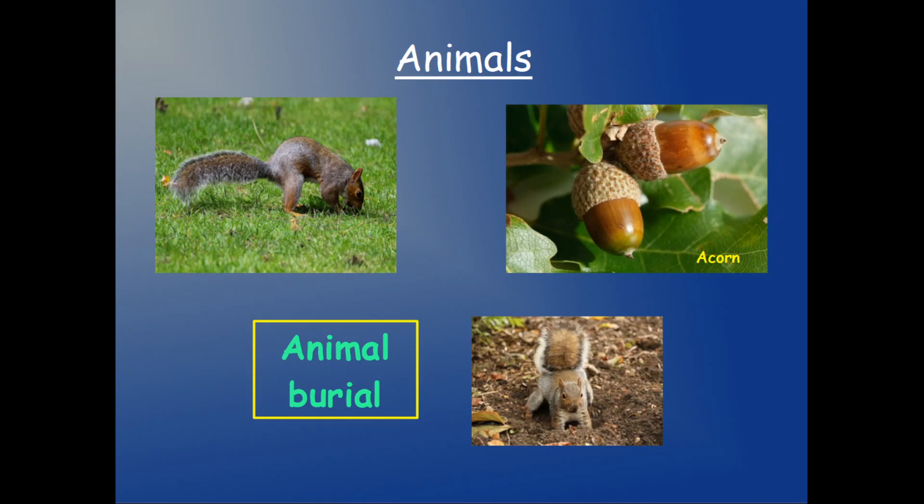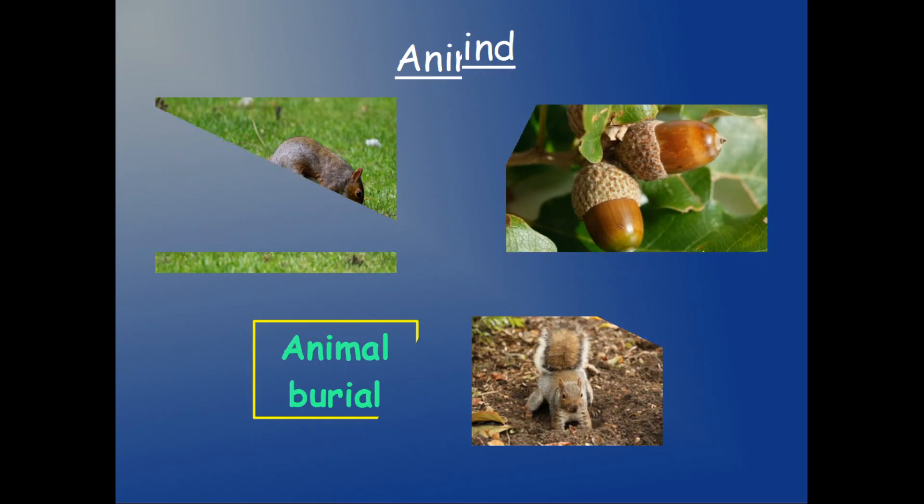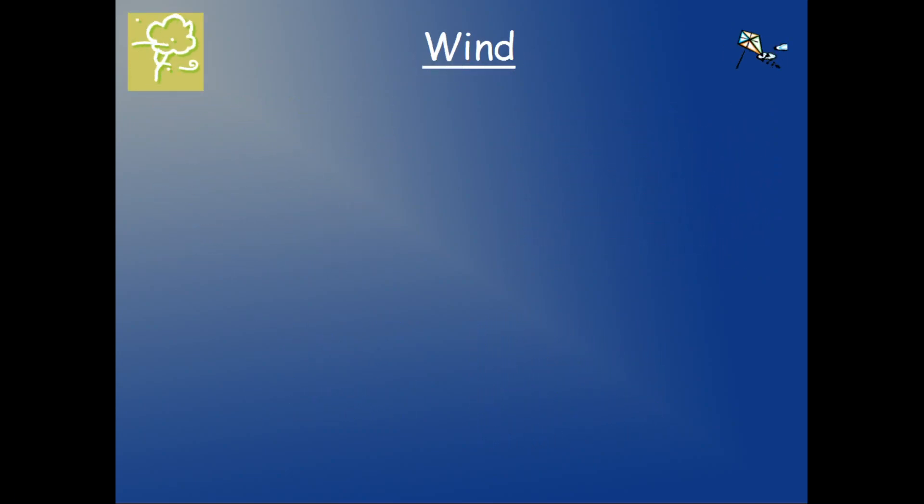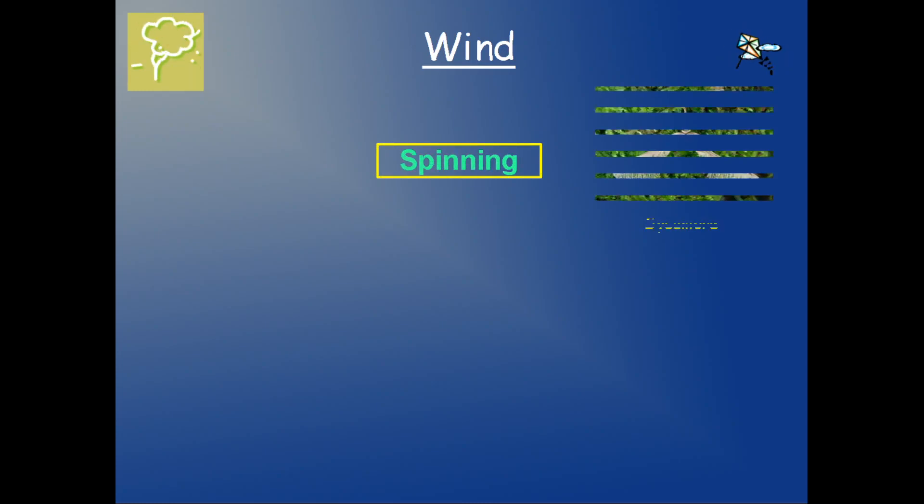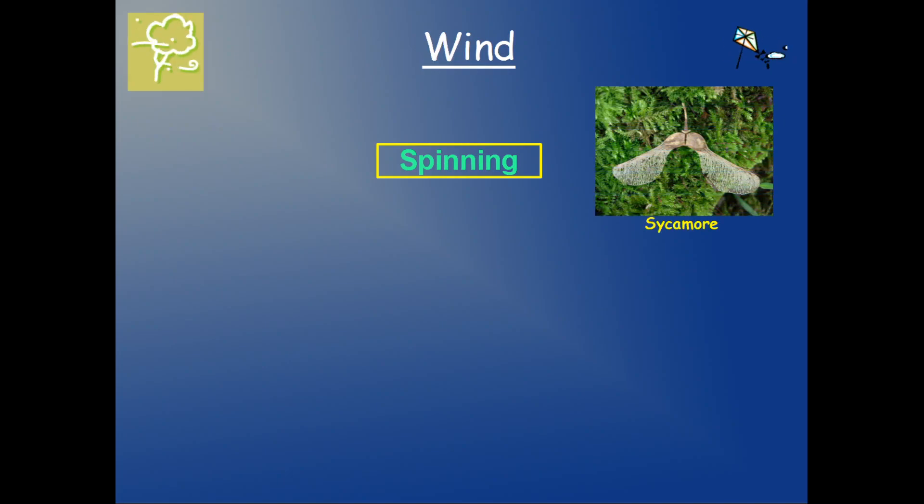Now, another method of seed dispersal is the wind. And we have two main options, two main techniques. One of them is spinning. What do I mean? Do you see the sycamore seeds? When you think about this, what comes to your mind?